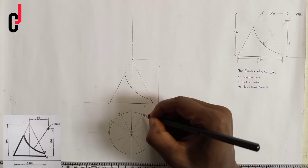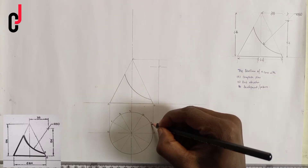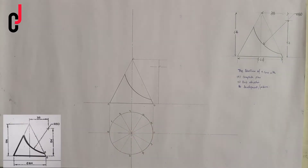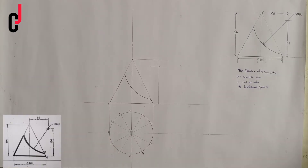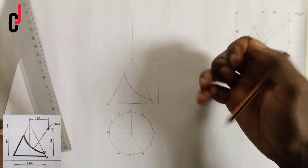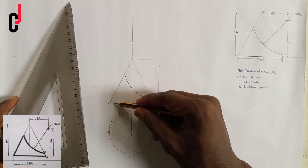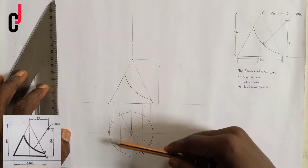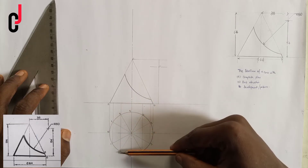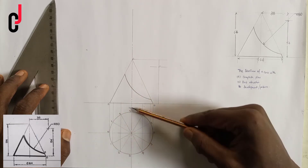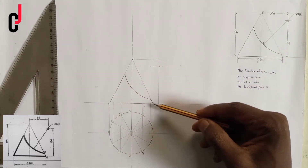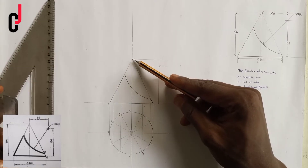I'm done dividing the circle into 12 equal parts. I'll number them: one, two, three, four, five, zero, five, four, three, two, one, and zero. I'll project my numbered lines to hit line AB. Each line passes through points one, two, three, four, five on line AB.